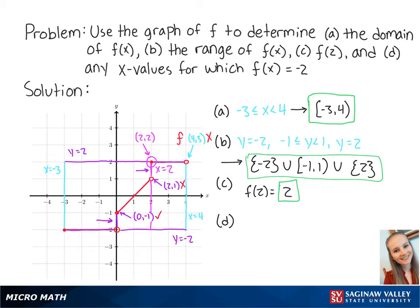For letter d, we want to find any x values for which f of x equals negative 2. Looking at the graph, we can see that when y is negative 2, x is between negative 3 and 0. However, we cannot include the point (0, negative 2) because it does not exist. So the answer for letter d is that x is between negative 3 inclusive and 0 exclusive, written as [-3, 0).